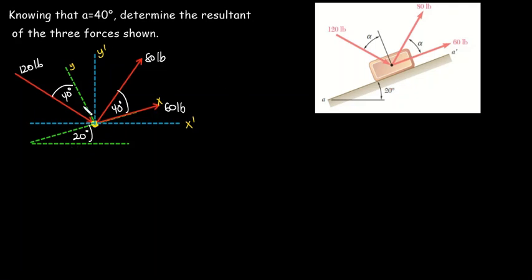You will see that the y-axis and the x-axis are perpendicular to each other, which means the angle between them is 90 degrees. Using Z-angles (alternate interior angles), the angle between the original y-axis and the inclined surface will also be 20 degrees.